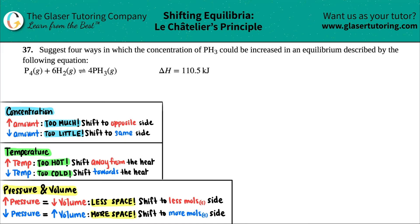Number 37, suggest four ways in which the concentration of PH3 could be increased in an equilibrium described by the following equation. And then they give us the equation over here with its delta H value.